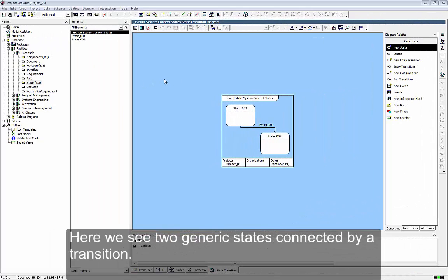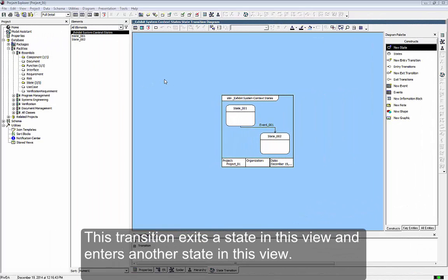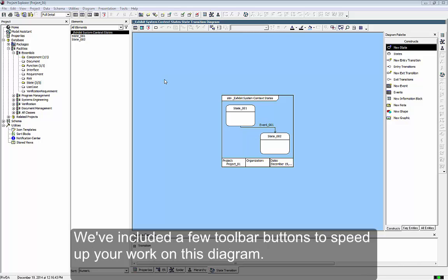Here we see two generic states connected by a transition. This transition exits a state in this view and enters another state in this view. We've included a few toolbar buttons to speed up your work on this diagram.